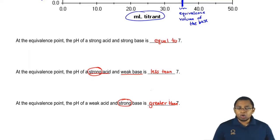And depending on what we're titrating, whether they both are strong or one is strong or weak, the equivalence point could have a pH equal to 7, less than 7, or greater than 7.